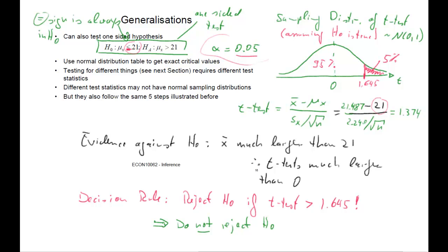These were all tests for the population mean. As a note on generalization: in the next section we will test different things, such as whether two discrete random variables are related, which will require different test statistics with potentially different sampling distributions. Some have a normal sampling distribution, others do not. But whenever we have a hypothesis test, the five steps we used will always be followed. This concludes the extra discussion on hypothesis tests.